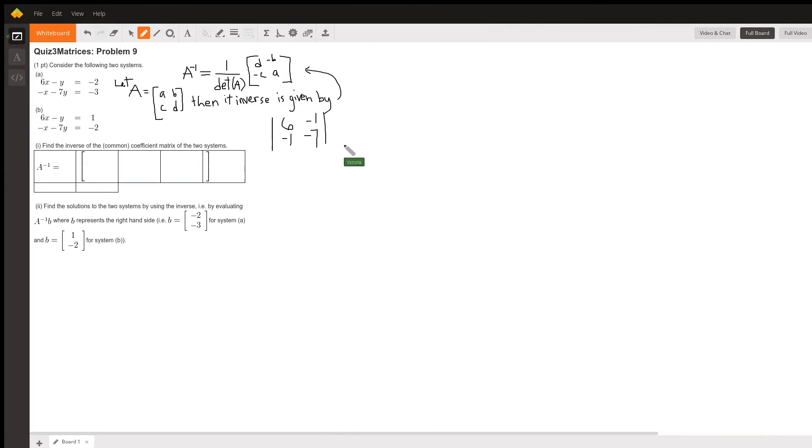I'm going to help answer the matrix question about solving a system of two variables and two equations. The coefficient matrix is 6, negative 1, negative 1, negative 7.